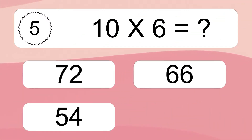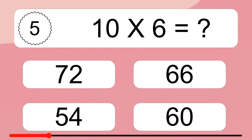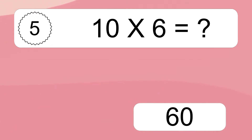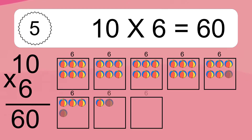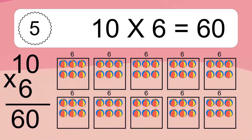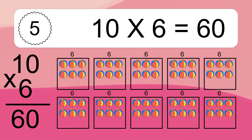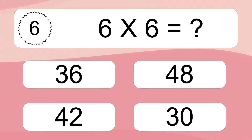Ten times six equals what? Ten times six equals 60. We have ten boxes, and each box has six colorful balls inside. If you count all the balls in all the boxes together, you will have ten times six balls.